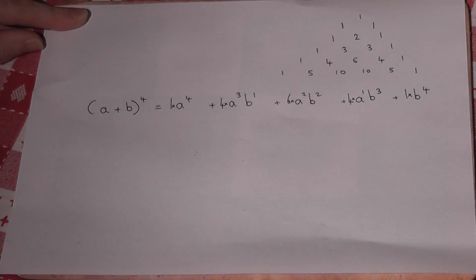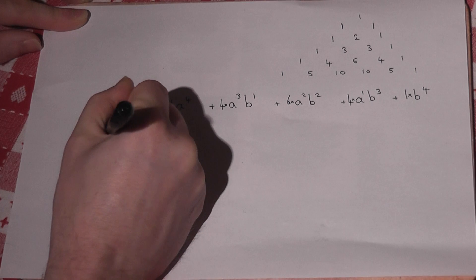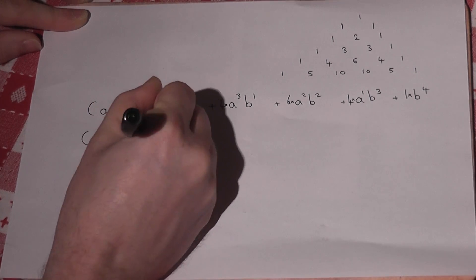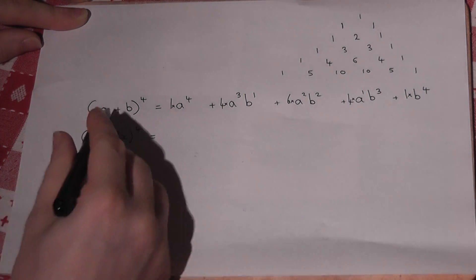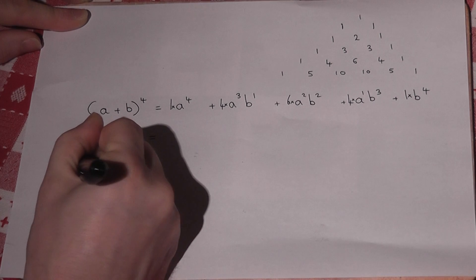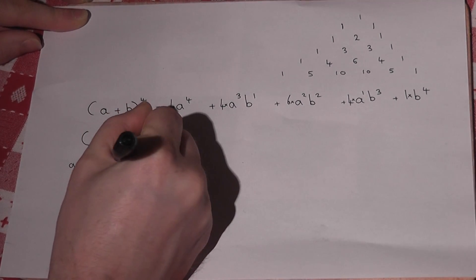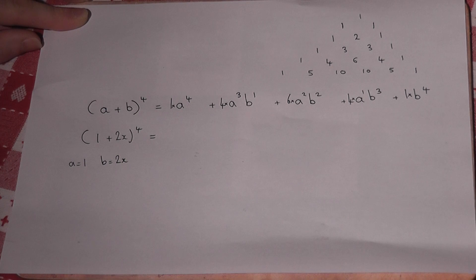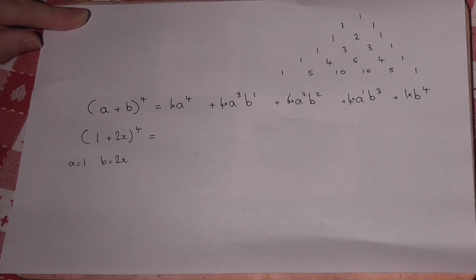So if we wanted to expand (1+2x)^4, now a is just 1 and b is just 2x, and we replace a by 1 and b by 2x in the following way.